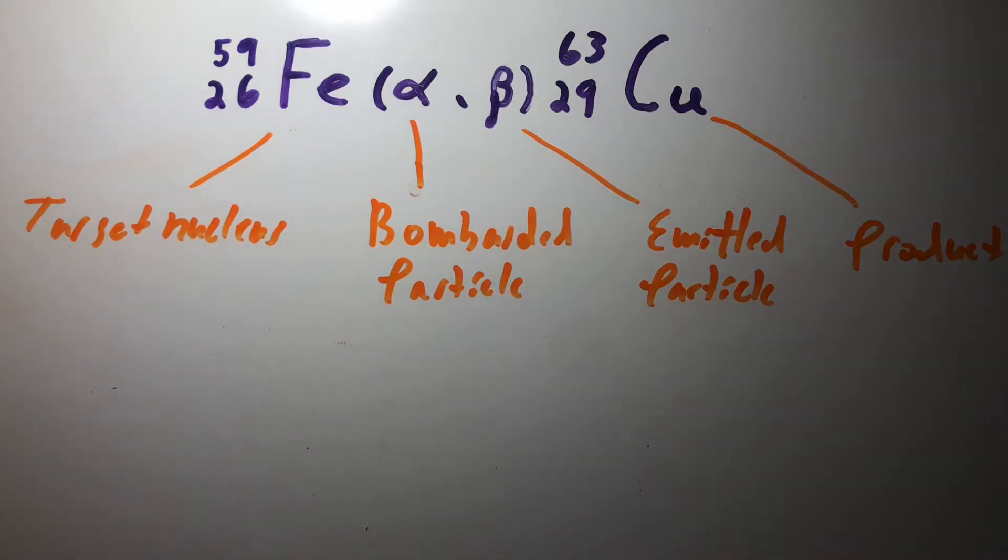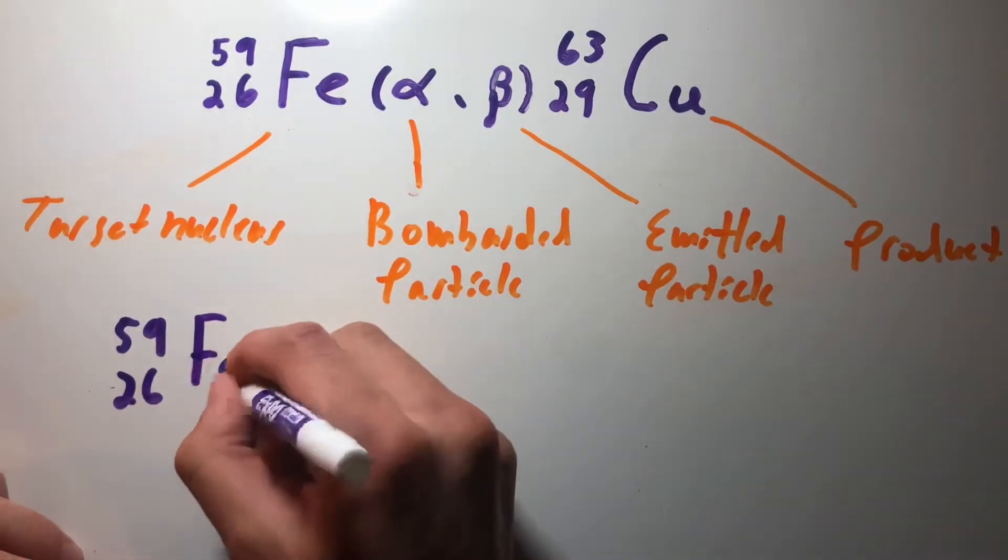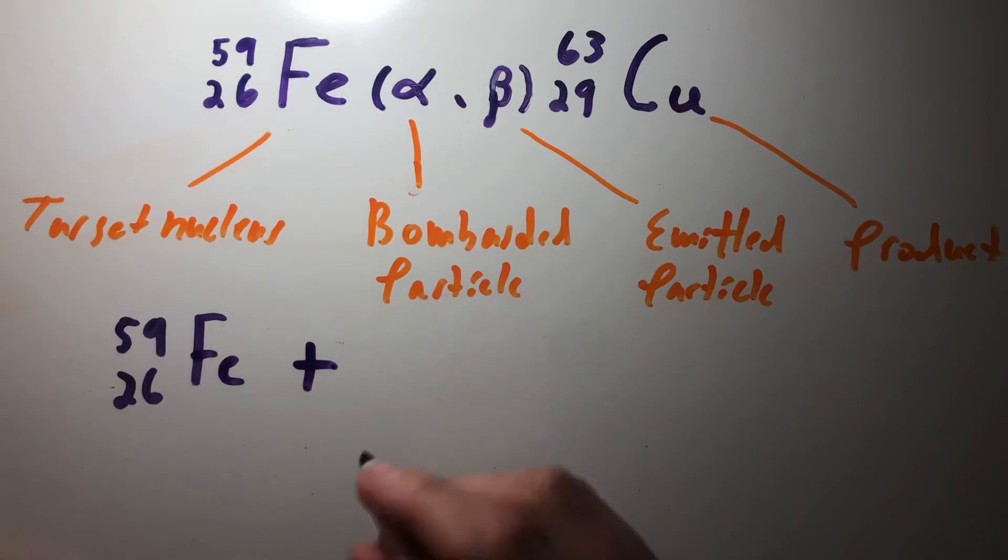Now that we know all that, we can write out our nuclear reaction. We have iron 59, and 59 is the mass number here—the number of protons and neutrons added together.